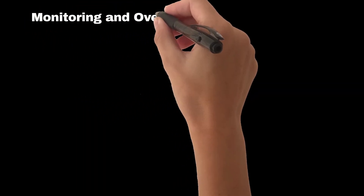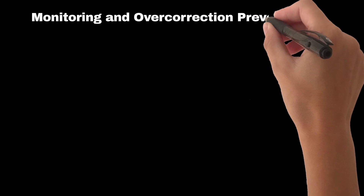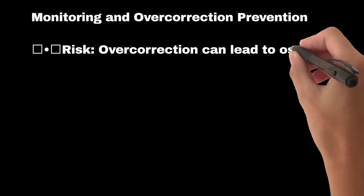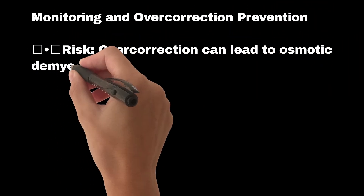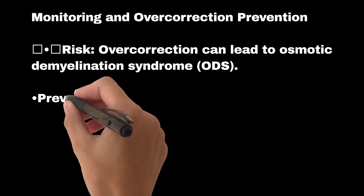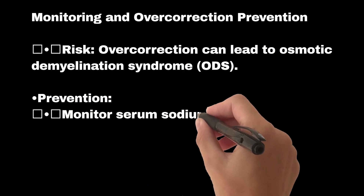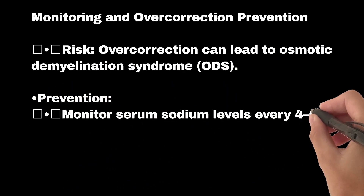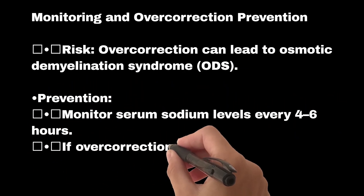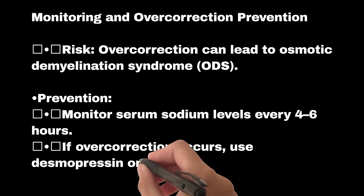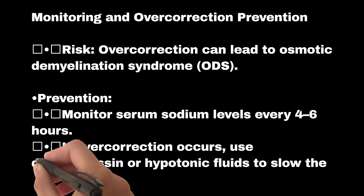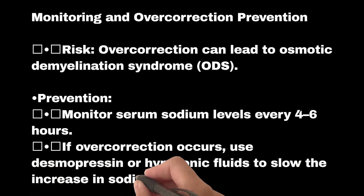Monitoring and overcorrection prevention: overcorrection can lead to osmotic demyelination syndrome (ODS). Prevention includes monitoring serum sodium levels every 4 to 6 hours. If overcorrection occurs, use desmopressin or hypotonic fluids to slow the increase in sodium.